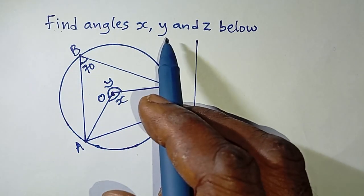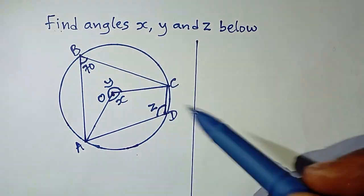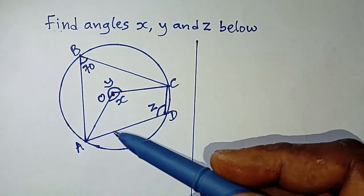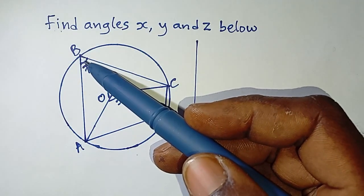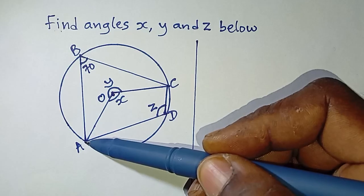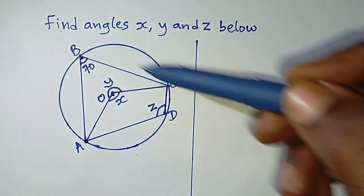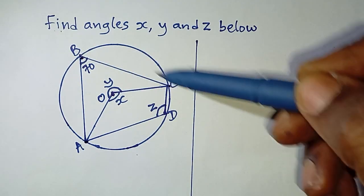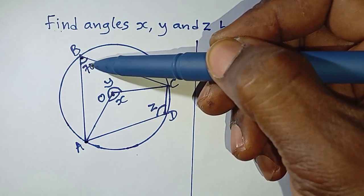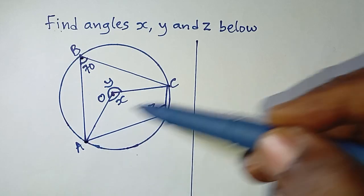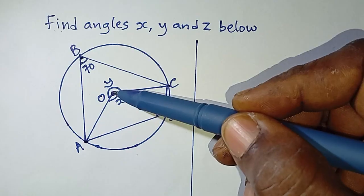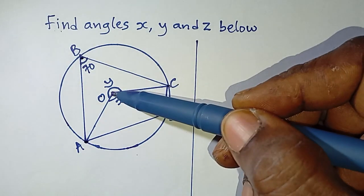We need to find angles x, y, and z. Let's start by looking at the given angle of 70 degrees. A line moves from A to B, and another line from C to B, forming this 70 degree angle. Now from the same points A and C, another set of lines moves from A to the center and from C to the center.